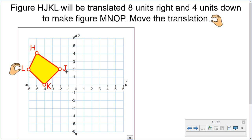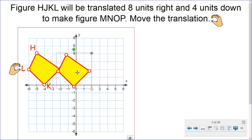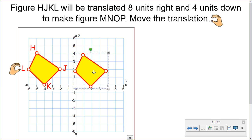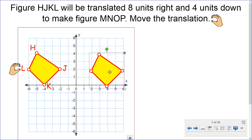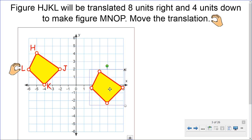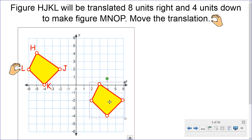So if we look at J, we're going to move it over 8 boxes or 8 units. Let's count: 1, 2, 3, 4, 5, 6, 7, 8. So we moved 8 units to the right. Now we have to move 4 units down to make our new figure. Let's move 4 units down, staying at that spot, going down: 1, 2, 3, and 4.